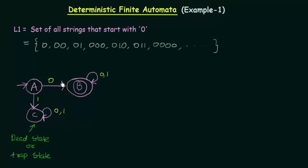Now my DFA is complete. In state A: input 0 goes to B, input 1 goes to C. In state B: whether 0 or 1, it stays in B. In state C: whether 0 or 1, it stays in C. I have now designed the DFA for the set of all strings that starts with 0.